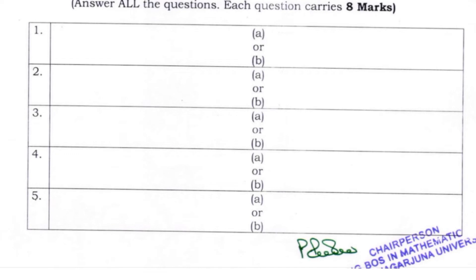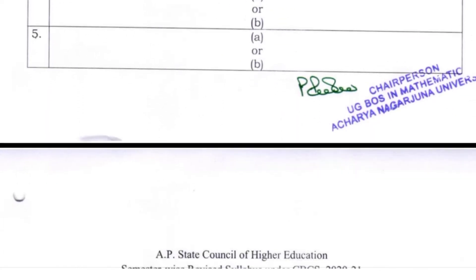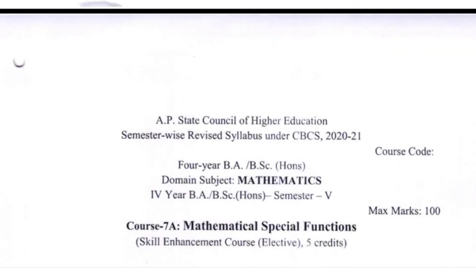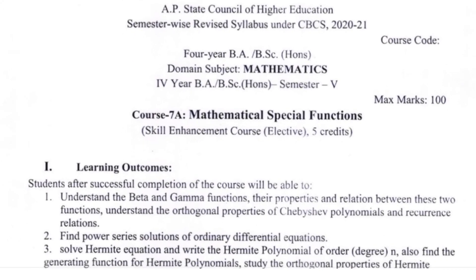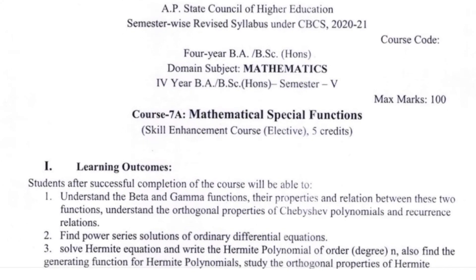Section C has 5 questions and we answer 5, but here there is an individual choice. Each question carries 8 marks.